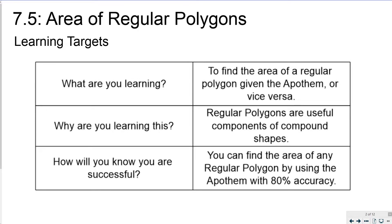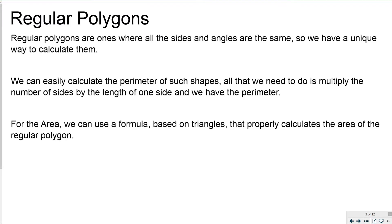With 80% accuracy. Remember that regular polygons are ones where all the sides and angles are the same, so there's a unique way to calculate their area. We can easily calculate the perimeter of such shapes — all we need to do is multiply the number of sides by the length of one side and we have the perimeter.